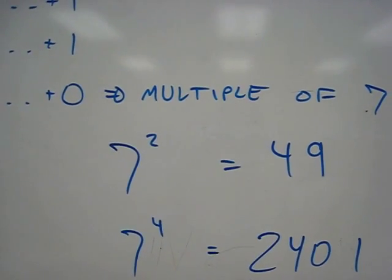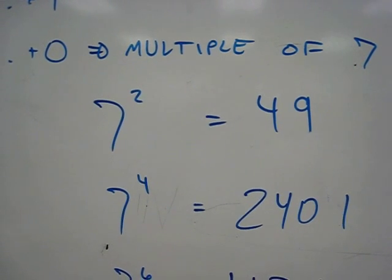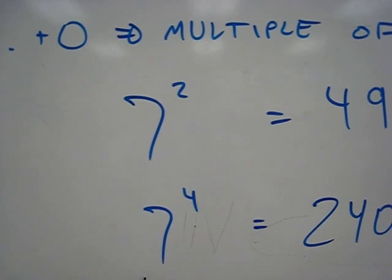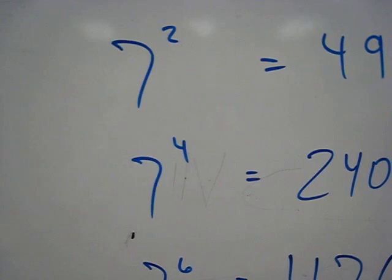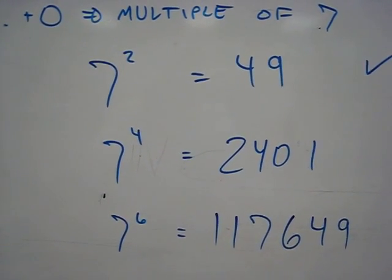So I did seven squared, which is 49, which we know for sure is the answer because we just found it. And if you go through all the exponents of seven, seven cubed, well that actually doesn't work out, but you'll find that the even exponents of seven do in fact work.